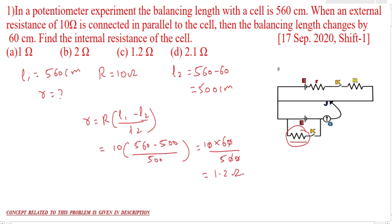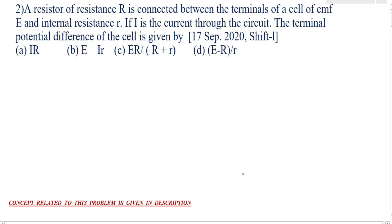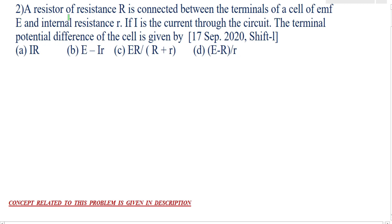So this is the first sum. Now let us go to our next sum. The next question is: a resistor of resistance R is connected between the terminals of a cell of EMF E and internal resistance r. If I is the current through the circuit, the terminal potential difference of the cell is given by?